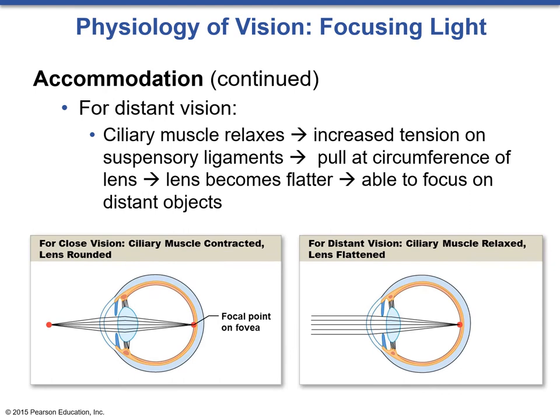For distant vision, it's the opposite. The ciliary muscle relaxes and increased tension on the suspensory ligaments pulls at the circumference of the lens, making it flatter. This allows us to focus on more distant objects. In far vision the ciliary muscle is relaxed and the lens is flattened, while in close vision the ciliary muscle is contracted and the lens is rounded, focusing light on the fovea.